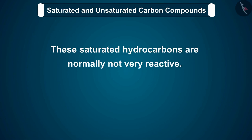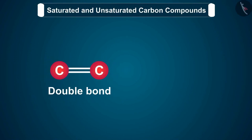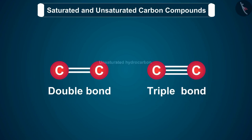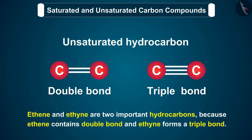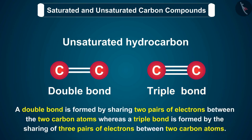These saturated hydrocarbons are normally not very reactive — they are quite unreactive. A hydrocarbon in which two carbon atoms are connected by a double bond or a triple bond is called an unsaturated hydrocarbon. Ethene and ethyne are two important hydrocarbons: ethene contains a double bond and ethyne forms a triple bond. A double bond is formed by sharing two pairs of electrons between two carbon atoms, whereas a triple bond is formed by the sharing of three pairs of electrons.